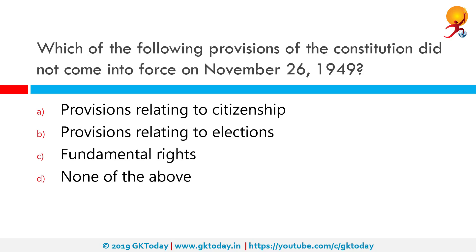Which of the following provisions of the constitution did not come into force on November 26, 1949? The correct answer is fundamental rights. Though the constitution came into force on 26 January 1950, some provisions relating to citizenship, elections, provisional parliament, and temporary and transitional provisions were given immediate effect on 26 November 1949.